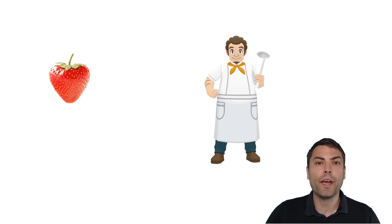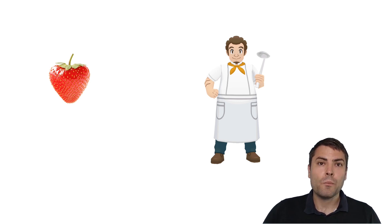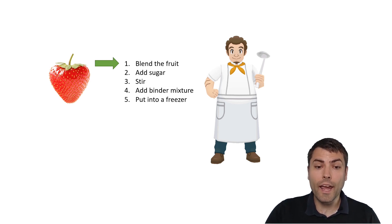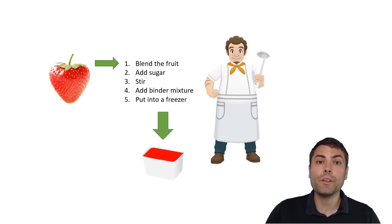Let's say the ice cream man wishes to create an ice cream from fresh strawberries. To accomplish that, he needs to follow a few steps. First, he needs to blend the fruit, then he needs to add sugar, then he needs to stir the bowl, then add binder mixture and put it into a freezer. And after all this is done, he receives a strawberry ice cream.